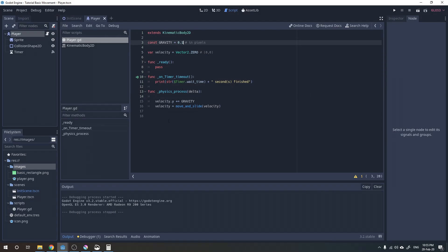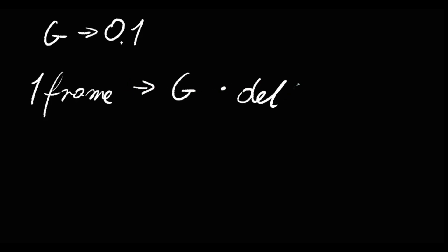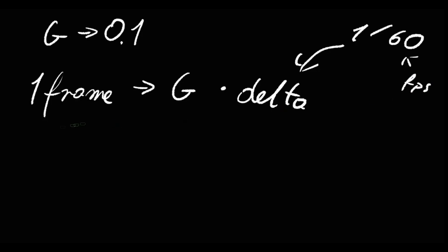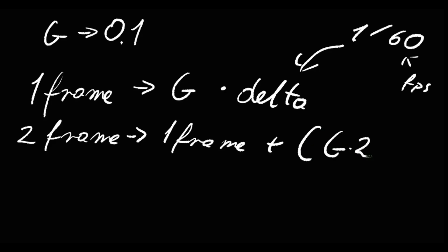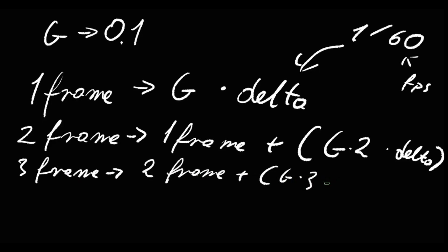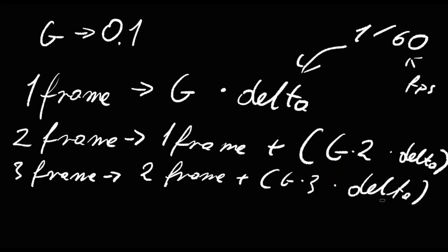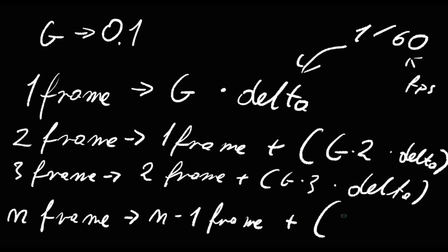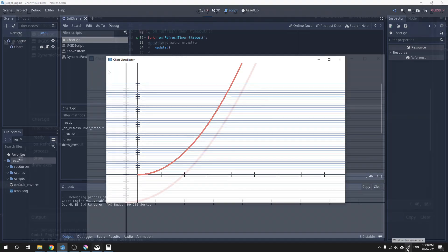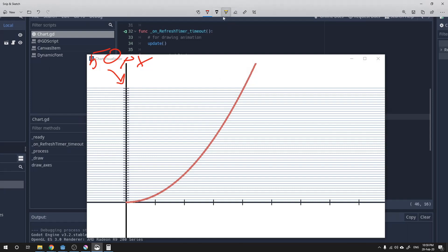Let's use gravity 0.1 and calculate the distance. The first frame will have 0.1 multiplied by delta. The next frame will have the distance from the previous frame plus 0.2 multiplied by delta. The next will be the same but plus 0.3 multiplied by delta. So we will have a formula: n-frame distance equals n-minus-1-frame distance plus n multiplied by 0.1 (our gravity) multiplied by delta. Using this in a chart — on the y-axis we have pixels, with a range of 50 pixels marked, and on the x-axis we have time in seconds. Using the formula and 0.1 gravity, our player should touch the ground after 4 seconds.